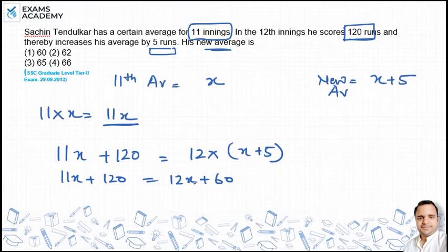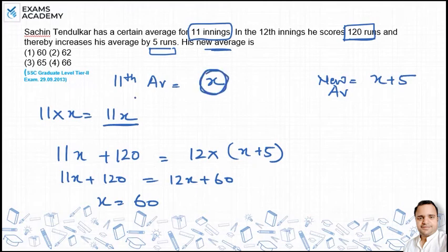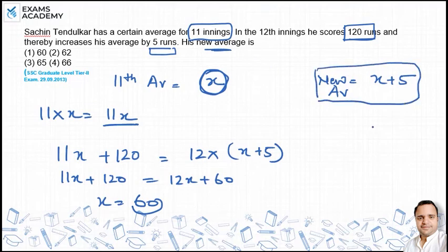11X को 12X में से minus करने पर X आएगा, और 120 से 60 minus होने पर 60 आएगा। So the old average X = 60. The question asks for the new average, which was X plus 5. Since X = 60, the new average = 60 + 5 = 65.